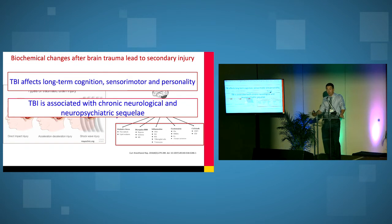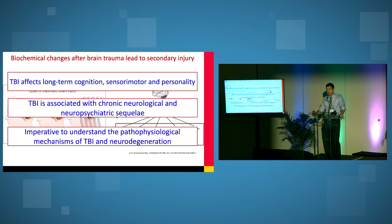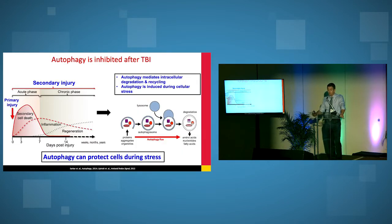And it's these processes, it's the result of these processes which contribute to that chronic or long-term injury. And so TBI affects long-term cognition, sensory motor, and personality. TBI is associated with chronic neurological and neuropsychiatric sequelae. For example, a lot of the dementia-related diseases. And it's imperative to understand the pathophysiological mechanism of TBI and neurodegeneration. What we want to do is try to understand what are those initial events which lead to chronic injury.